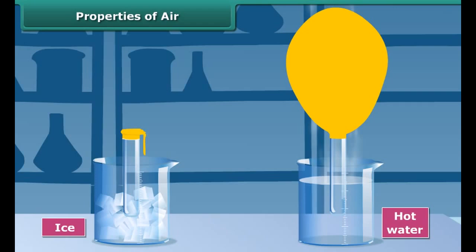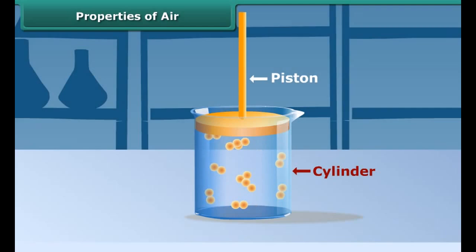This shows that air exerts pressure. Take a cylinder fitted with piston. Press the piston inward. You can compress air inside the cylinder so air can be compressed.